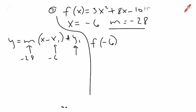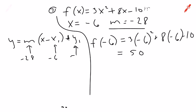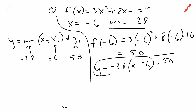To get y1, we substitute x equals negative 6 into the original equation: f of negative 6 equals 3 times negative 6 in parentheses squared, plus 8 times negative 6, minus 10. Make sure the negative 6 is in parentheses before squaring. That gives us 50. So y1 equals 50, and the final equation is y equals negative 28 times the quantity x minus negative 6, plus 50. That's the equation of the tangent line through x equals negative 6.